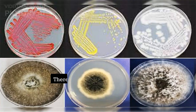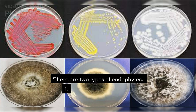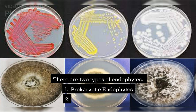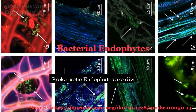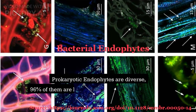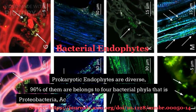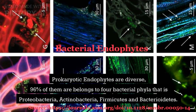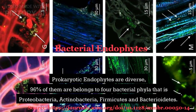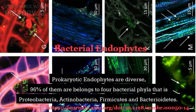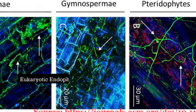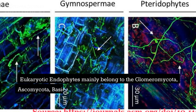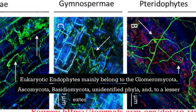There are two types of endophytes: prokaryotic endophytes and eukaryotic endophytes. Prokaryotic endophytes are diverse — 96% of them belong to four bacterial phyla: Proteobacteria, Actinobacteria, Firmicutes, and Bacteroidetes. Eukaryotic endophytes mainly belong to Glomeromycota, Ascomycota,